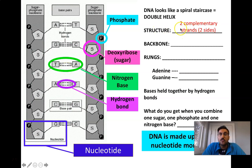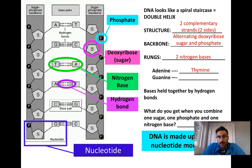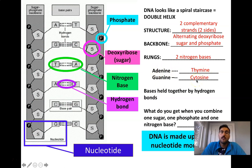DNA has two complementary strands connected by hydrogen bonds. It has a backbone of sugars and phosphates, and two nitrogen bases in the rungs. Adenine binds to thymine, and guanine binds to cytosine — those are the four base pairs: A, T, C, and G — held together by hydrogen bonds.